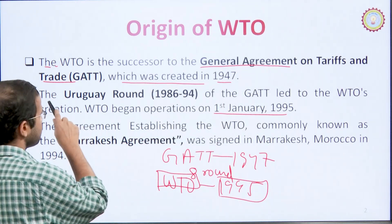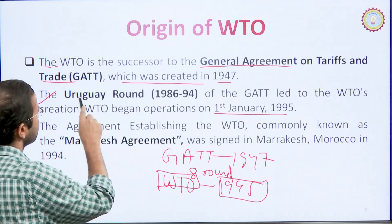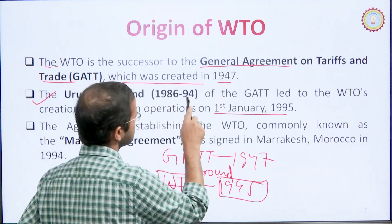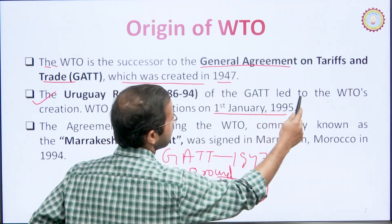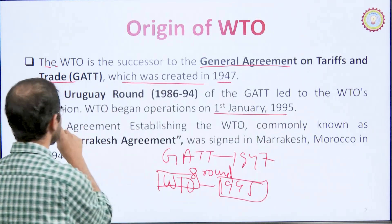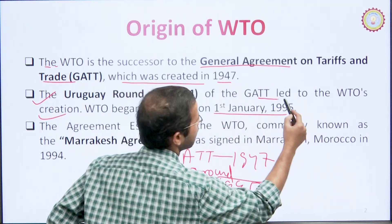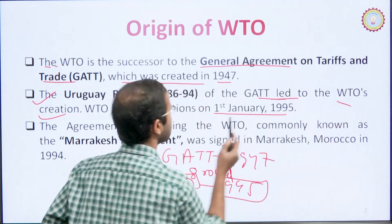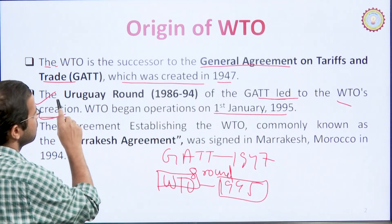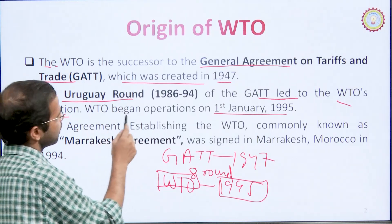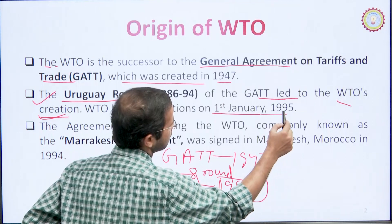The round that led to the WTO's creation was the Uruguay Round, which ran from 1986 to 1994. The GATT led to WTO creation through the Uruguay Round, and WTO began operations on 1st January 1995.